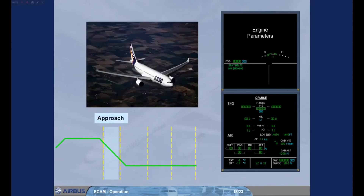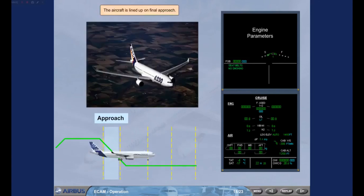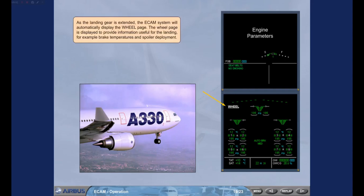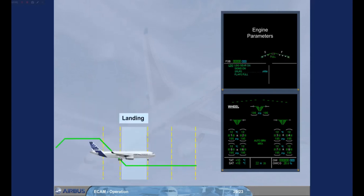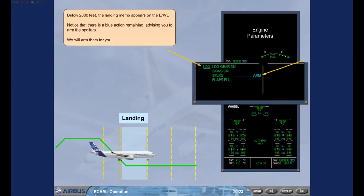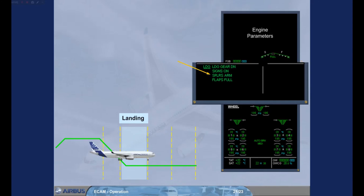The aircraft is lined up on final approach. As the landing gear is extended, the ECAM system will automatically display the wheel page. The wheel page is displayed to provide information useful for the landing, for example brake temperatures and spoiler deployment. Below 2000 feet, the landing memo appears on the engine warning display. Notice that there is a blue action remaining, advising you to arm the spoilers. We will arm them for you. The blue action line is replaced by a green action completed indication, and there are now no blue action lines outstanding.